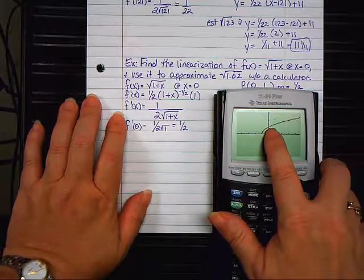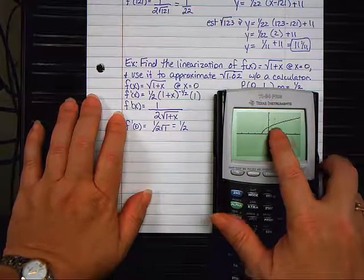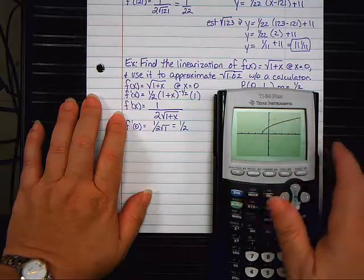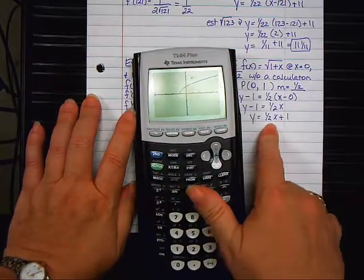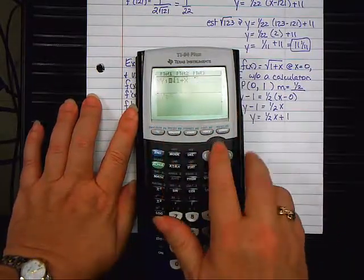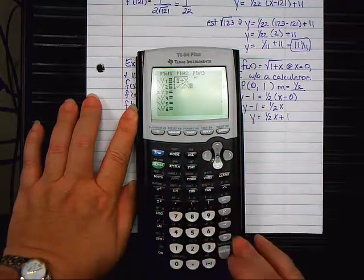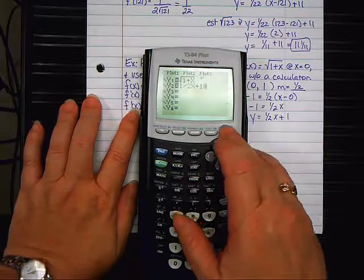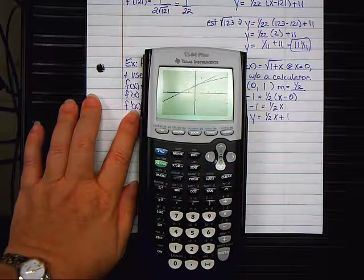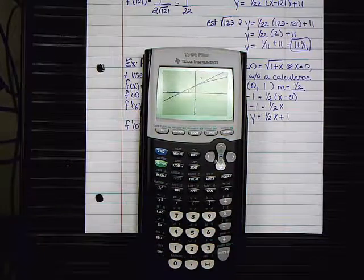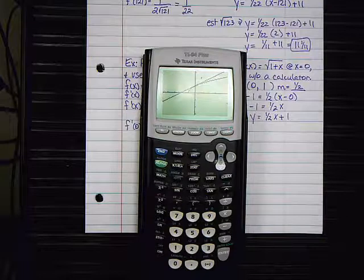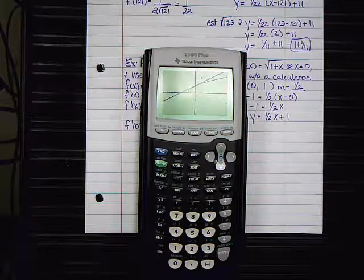We just found the equation of the tangent line at 0. So here's 0, 1. That's the point in question. We just found the equation of the line that should be tangent right there. I'm going to go now to y equals again and type in that equation. 1 half x plus 1. And graph it also. Now look at that. Is that the tangent line at 0? Perfect. We did it just right. We got the math right. It is the tangent line.